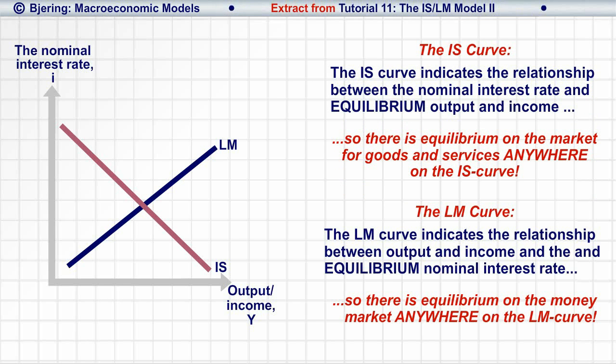Consequently, there's simultaneous equilibrium on the two markets where the IS curve intersects the LM curve.